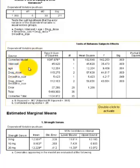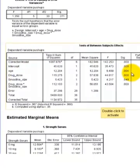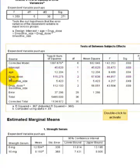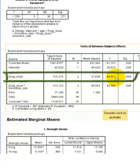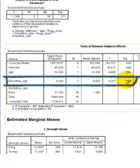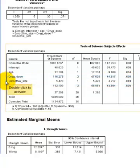According to this: age — there was a significant difference between the groups because of age. Drug dose, our first IV: significance is less than 0.05, so yes, the drug dose had a significant effect on how many push-ups these guys did. And smoothie size — barely, it's right next door to 0.05 — so we're going to go ahead and say yes, if you control for age, then smoothie size is significantly effective on the number of push-ups.